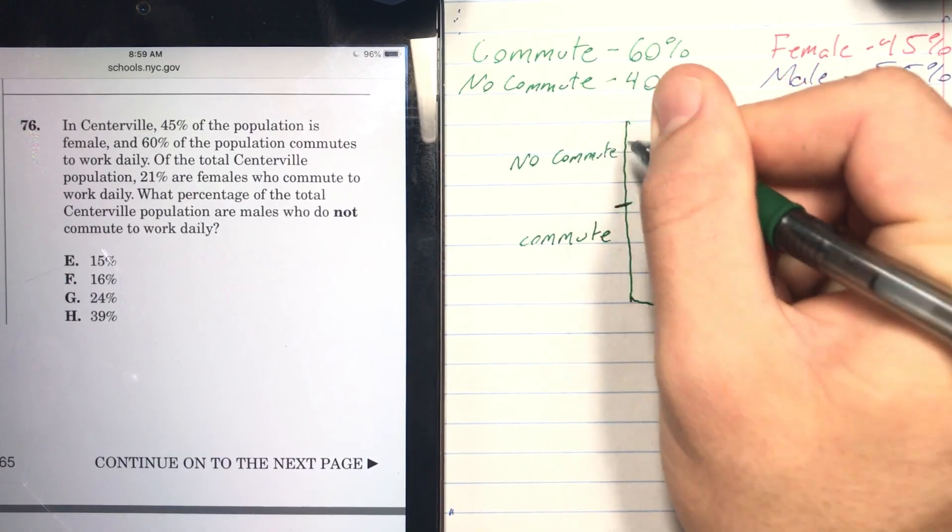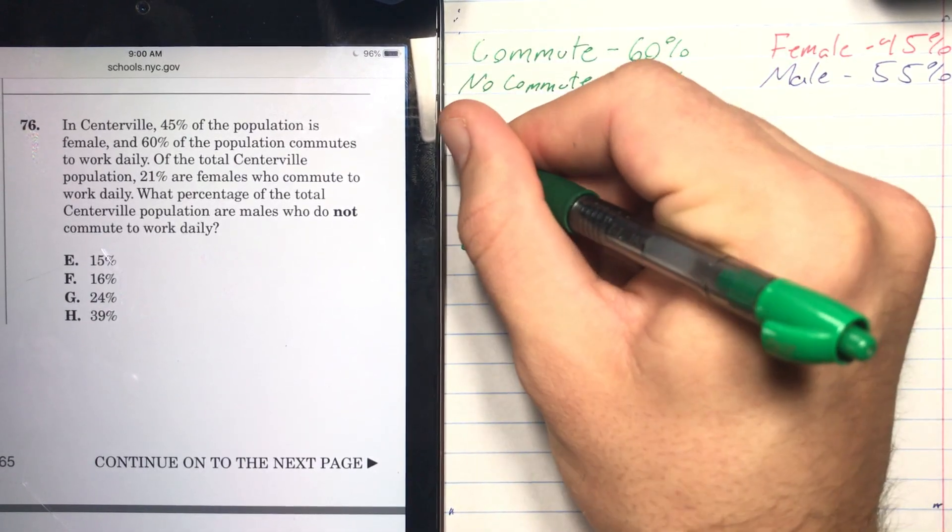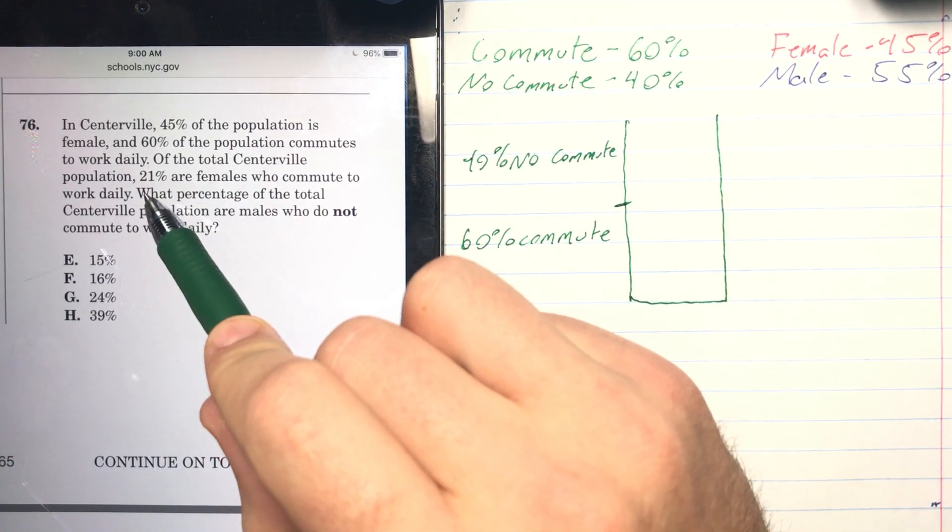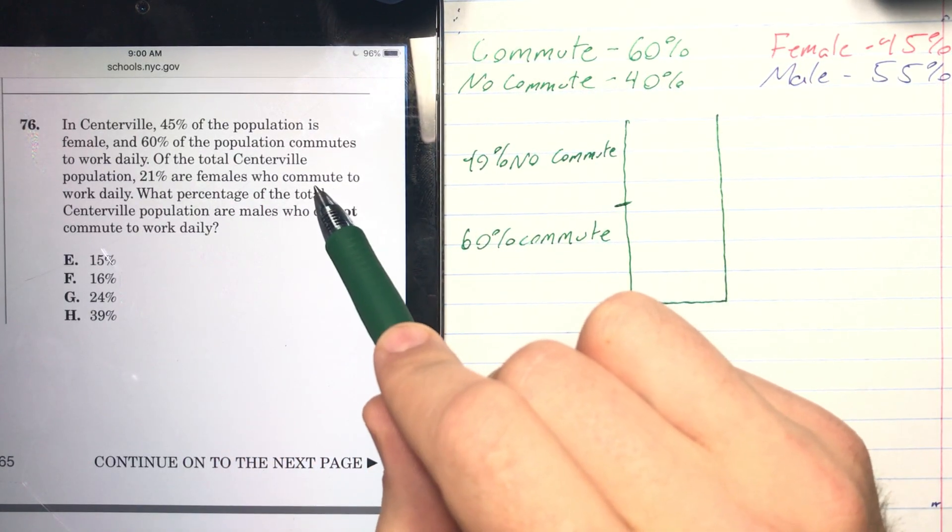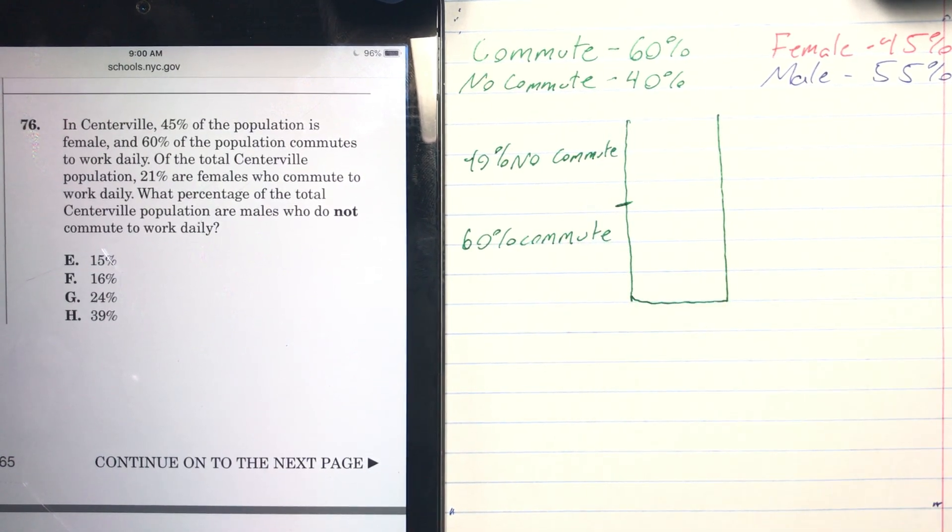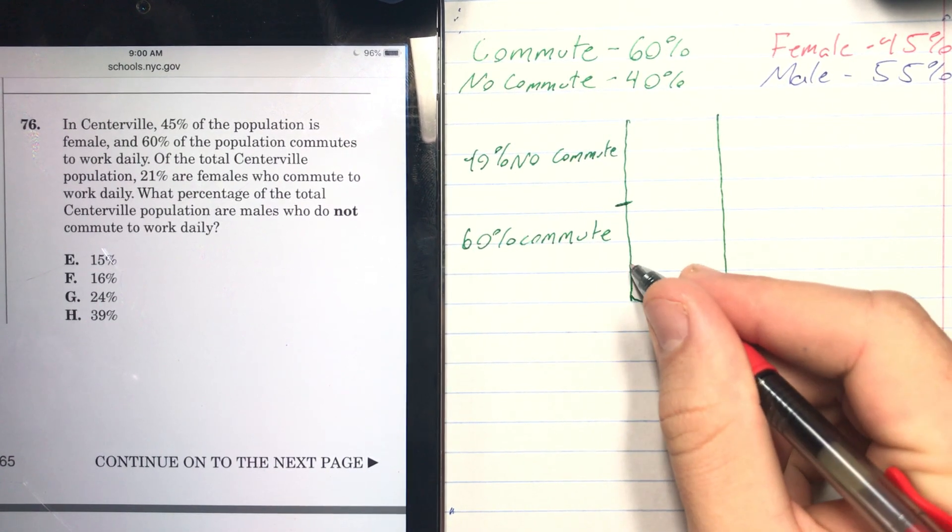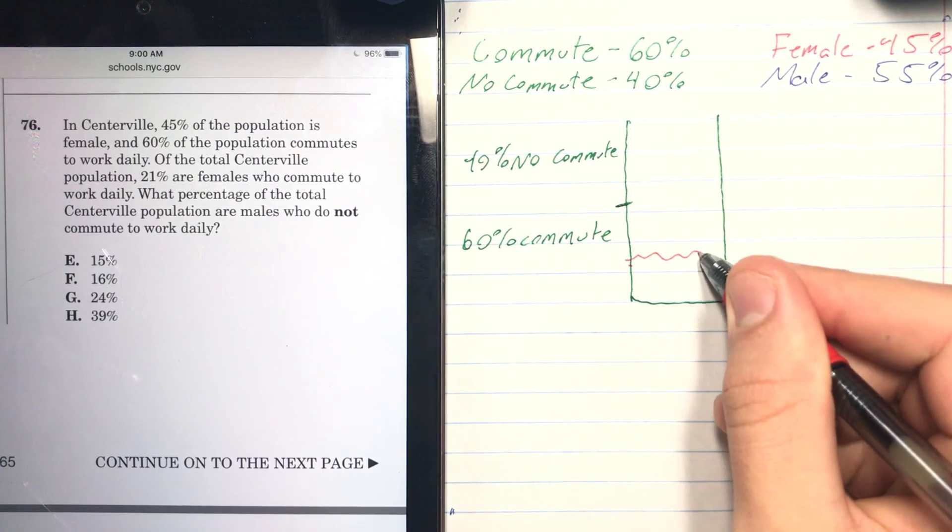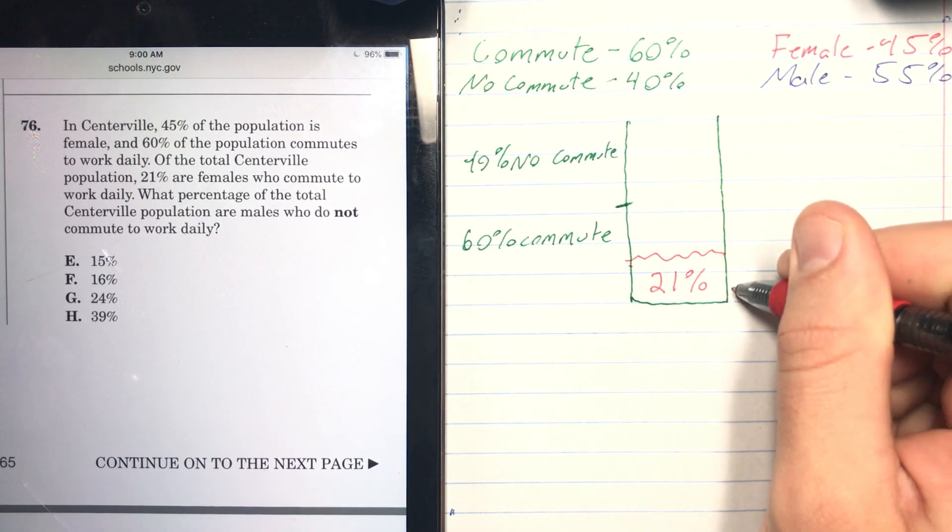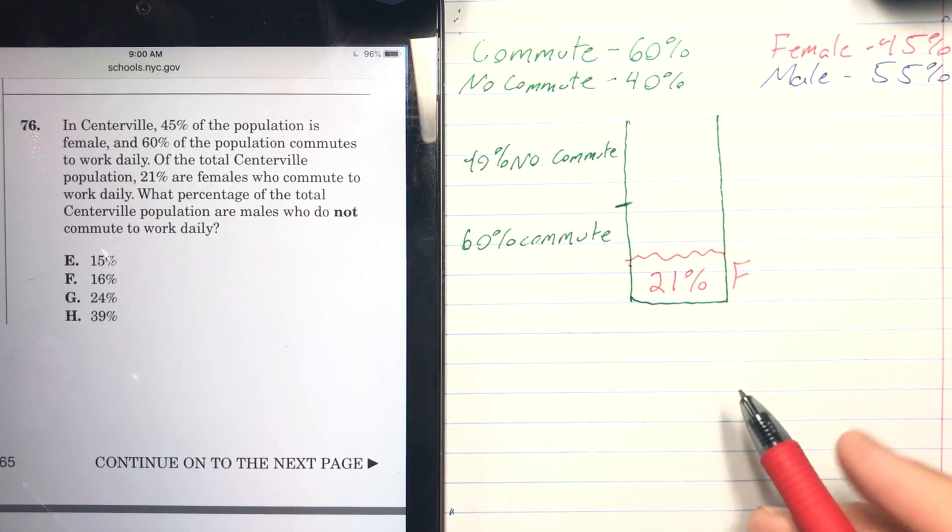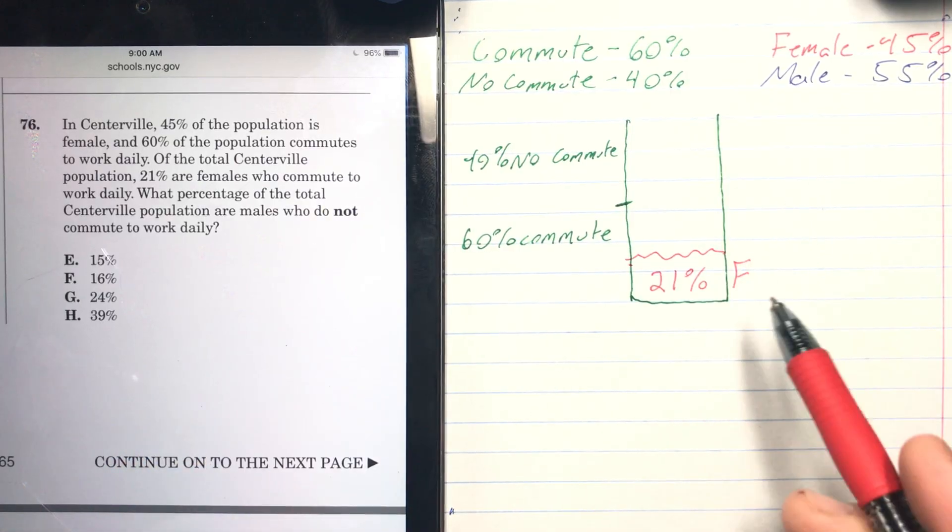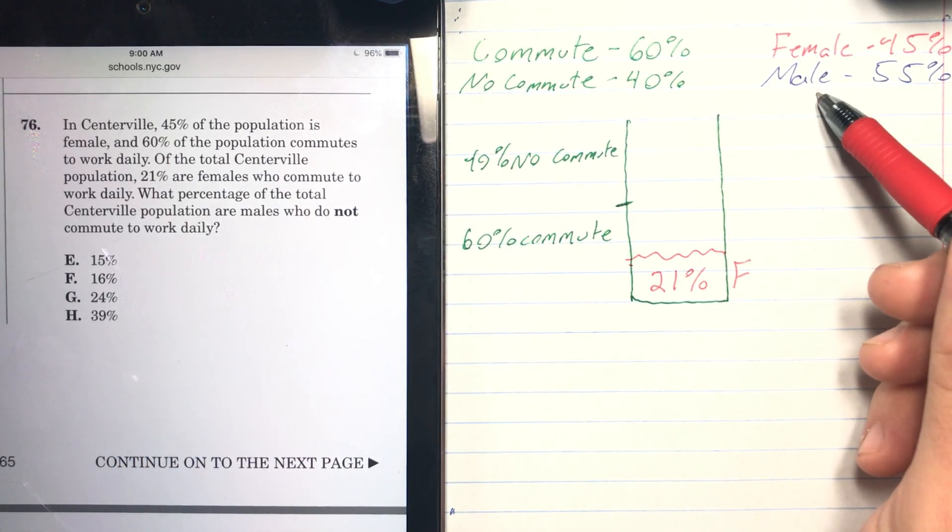This is 60% and this is 40%. So 21% are females who commute, so they're going to be in the commute section and it's going to be about this big. This is 21% of females who commute. This is all the information that we're given and we need to find out men who do not commute.